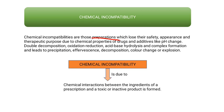Chemical properties of drugs and additives — such as pH change, double decomposition, oxidation-reduction, acid-base reactions, hydrolysis, and complex formation — cause or lead to precipitation, effervescence, decomposition, color change, or explosion.